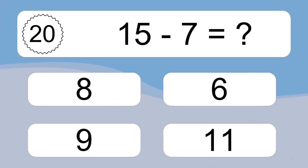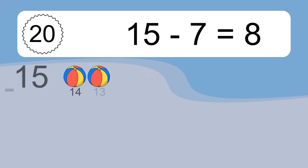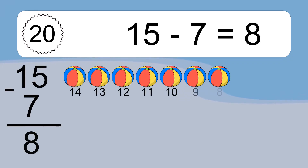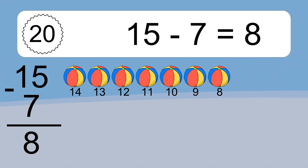15 minus 7 equals what? 15 minus 7 equals 8. Let's count it: 14, 13, 12, 11, 10, 9, 8.